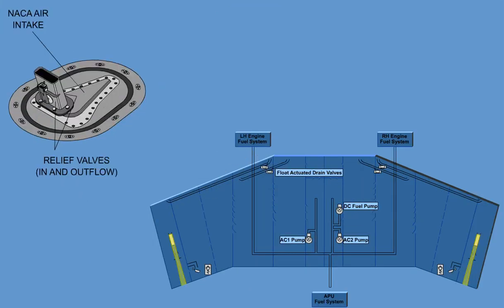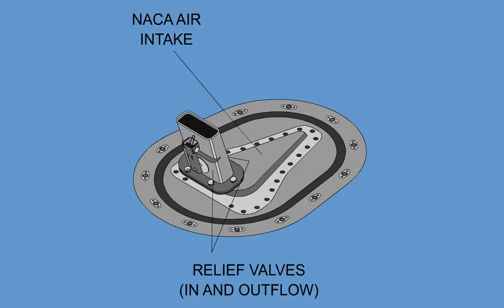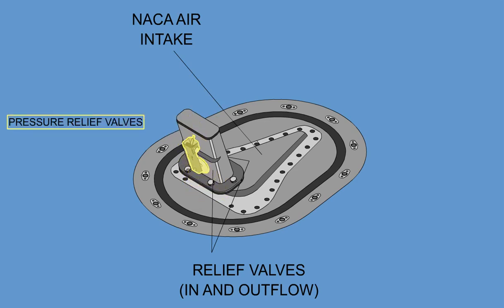Through the NACA air inlet, airflow into and out of the tank is guaranteed. The inlet provides slight ram pressure in the tank during flight and is fitted with a flame arrester. If the flame arrester becomes blocked, it can be bypassed via inward and outward pressure relief valves. A high-capacity poppet-type hydromechanical pressure relief valve will open automatically if the pressure inside the tank exceeds 3.0 PSIG.